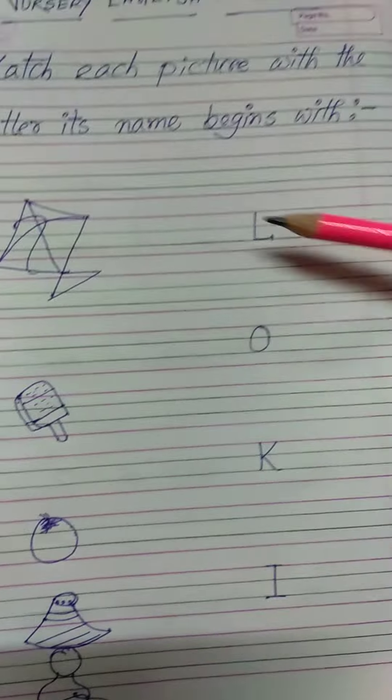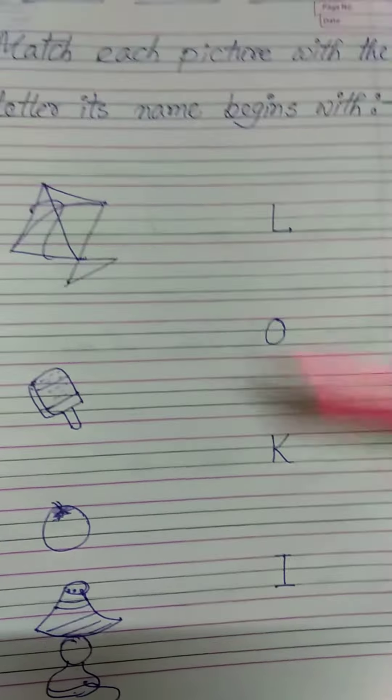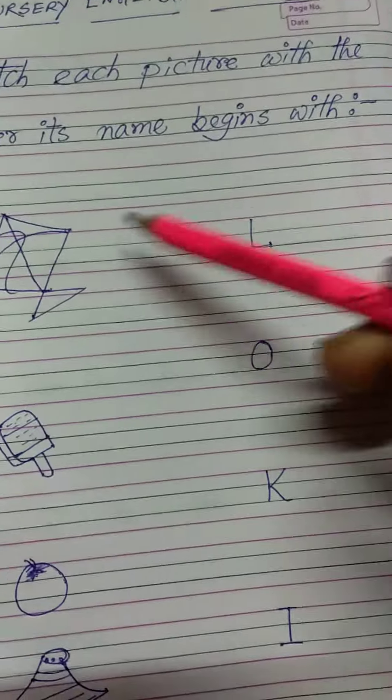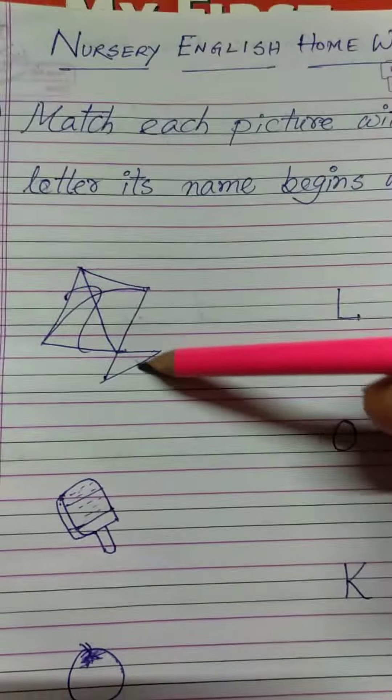Here are some pictures and here are some letters. You have to match the picture's name begins with the letter. Okay, so look at the picture. This is a kite, so K is for kite, you have to match it with K.